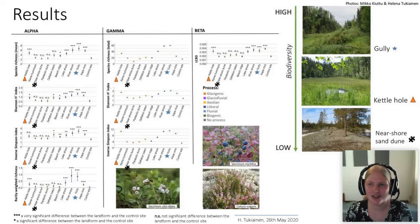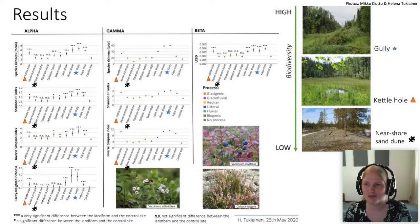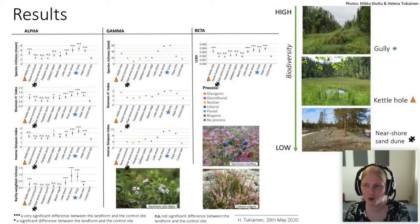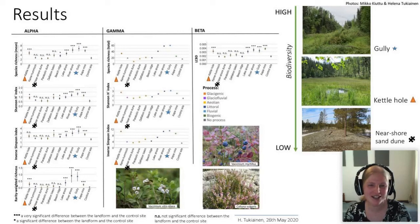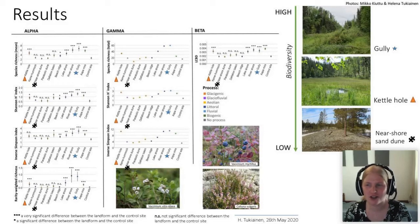Now to the results. In the results plots, the y-axis is the biodiversity measure, increasing upwards, and the x-axis represents the landforms and the control site, which is the last one in each plot. Asterisks above each measure indicate if the biodiversity measure of the landform differs significantly from the control site. Alpha, gamma, and beta represent different spatial levels of biodiversity: alpha is local, gamma is for the diversity of the bigger area, and beta is diversity between sites. The figures also show the three most common species in our data: lingonberry, bilberry, and heather. In general, landforms were more diverse than the control sites.